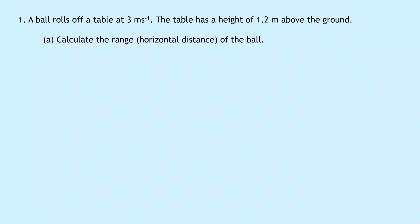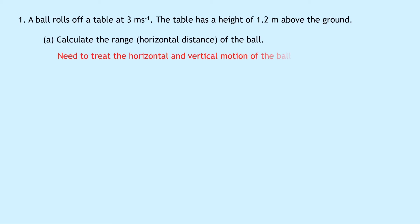Just a reminder that these are the kind of questions you would have done at National 5 level. Question 1 says that a ball rolls off a table at 3 meters per second. The table has a height of 1.2 meters above the ground. Part A says to calculate the range, i.e. the horizontal distance of the ball. Whenever we're dealing with projectiles launched horizontally, we need to treat the horizontal and vertical motion of the ball separately.